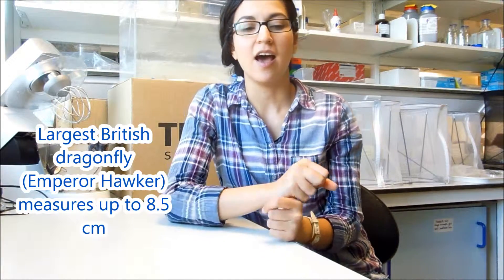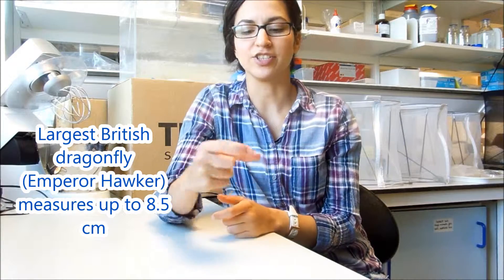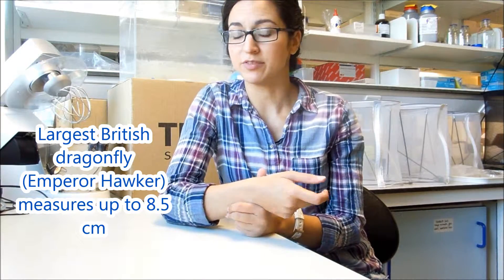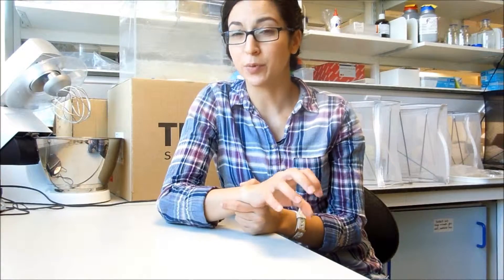The main difference is first size. Dragonflies are much larger than damselflies. Damselflies are usually very slim and are about 3 to 5 centimeters, whereas dragonflies can measure from 6 to 10, even 12 centimeters depending on species. So they're a lot larger and stourier compared to damselflies.